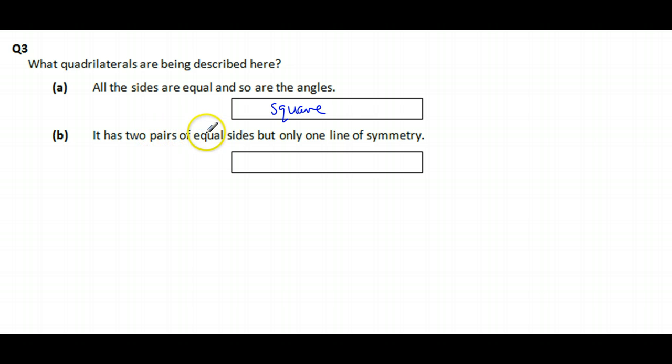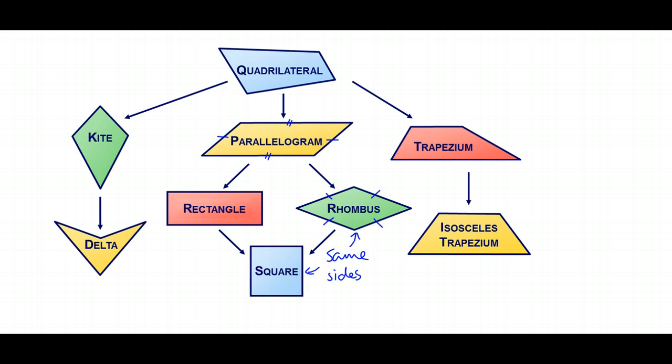It has two pairs of equal sides, but only one line of symmetry. Two pairs of equal sides. Let's have a look. This has got two pairs of equal sides, top and bottom, left and right. So is this, so is this, so is this. But also, so is the kite. This one up here are equal, those two are equal, and so are these two down here. So we've got lots of options here.